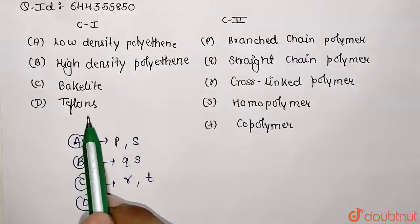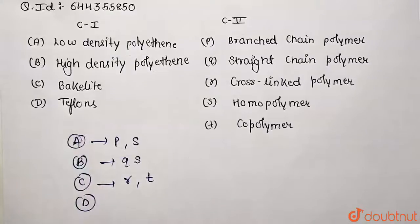Lastly, we have Teflon. Teflon is also called polytetrafluoroethene and is used for making gaskets and oil seals. It is made from the single monomeric unit of tetrafluoroethene, so it's going to match with homopolymer - option S.